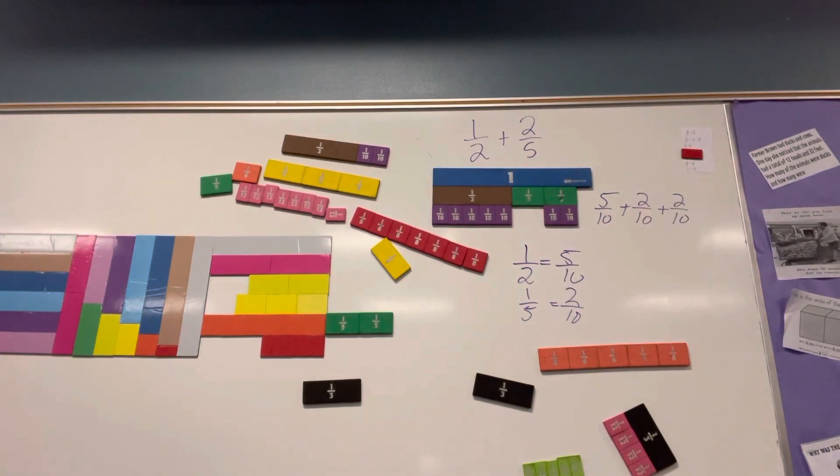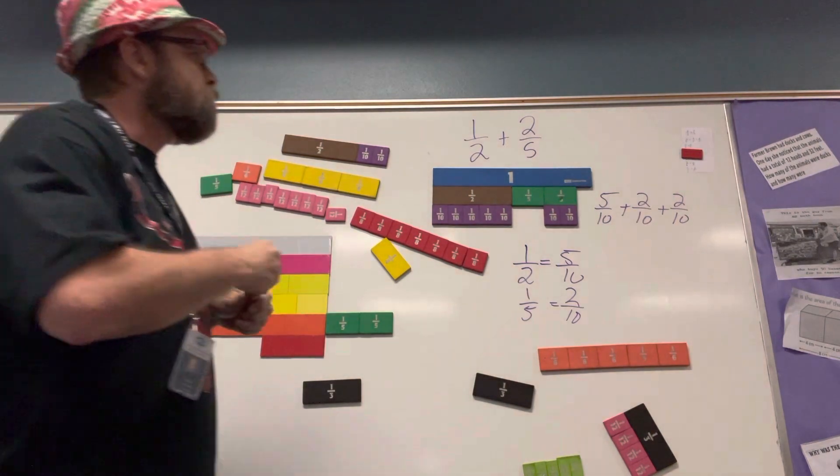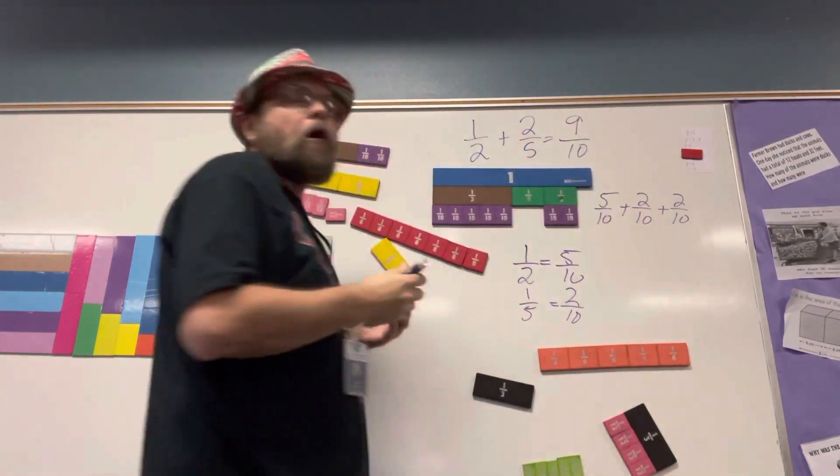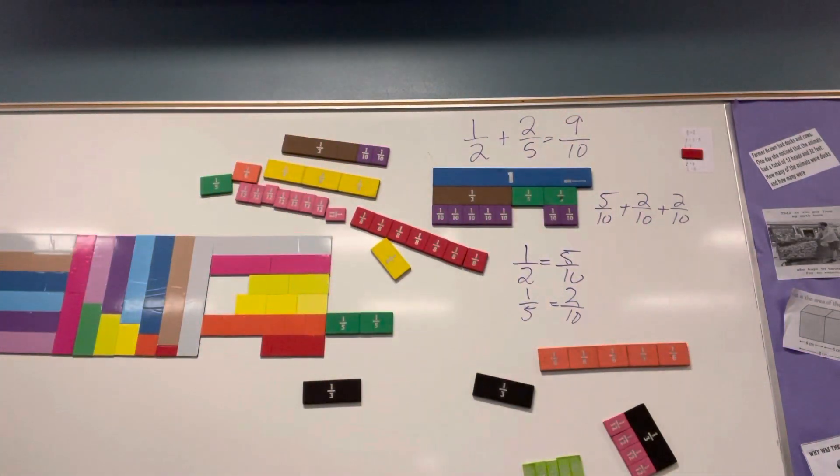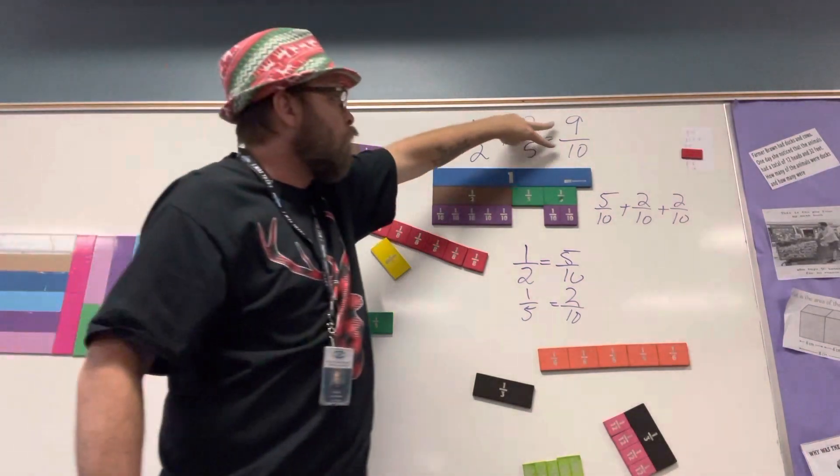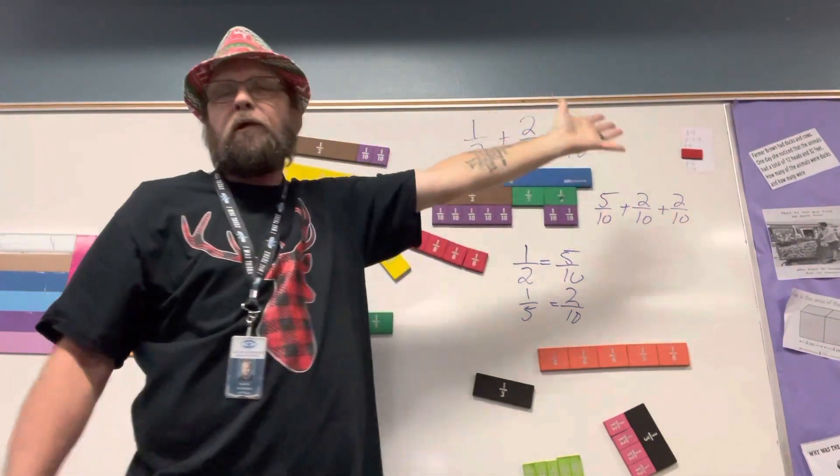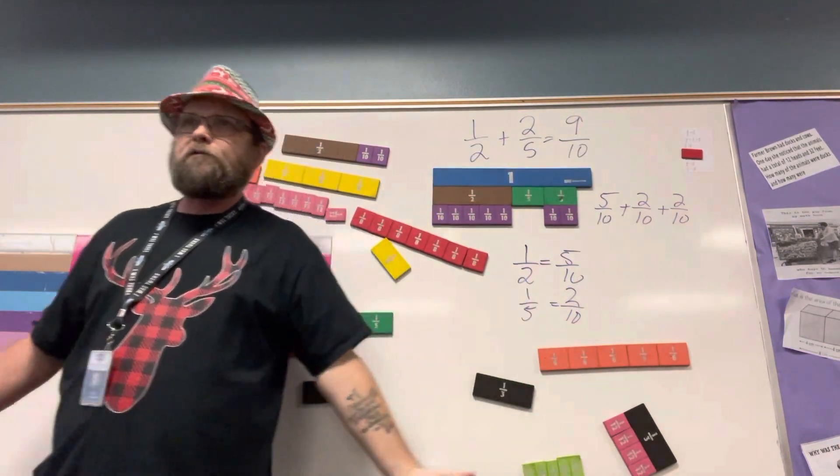Now once we've decomposed it and written it like that, Brooke, what did you say five tenths plus two tenths plus two tenths was? Equals nine tenths. Brooke, are there any other pieces that we could use to make it so we have fewer pieces? No. If the numerator and denominator are one apart, we can't use any fewer pieces to solve it.